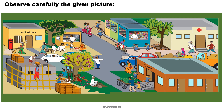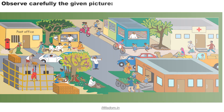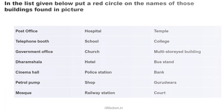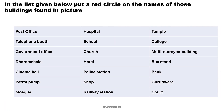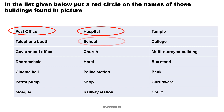Observe carefully the given picture again. In the list given below, put a red circle on the names of those buildings found in the picture. I will circle post office, hospital, school, and shops, as all of these are found in the picture.